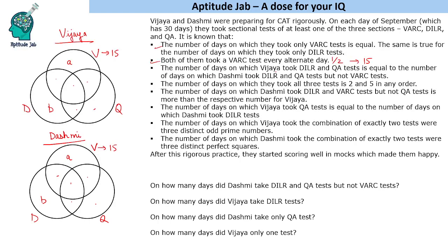The number of days on which Vijaya took DILR and QA tests — the combination of DILR and QA — is equal to the number of days on which Dashmi took DILR and QA tests but not VARC. Pay attention: the first part does not say 'not VARC,' but the second part does. So these two specific regions are equal.